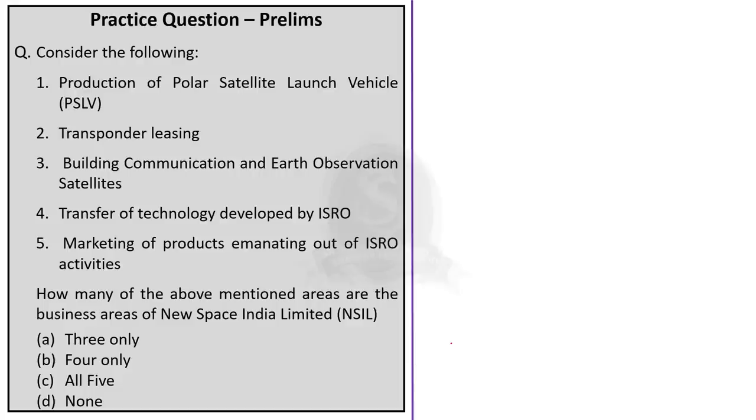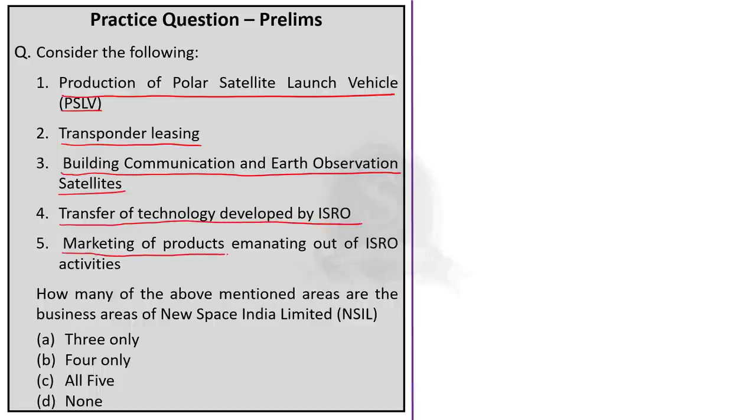Question number one. Consider the following. 1. Production of polar satellite launch vehicle. 2. Transponder leasing. 3. Building communication and earth observation satellites. 4. Transfer of technology developed by ISRO. 5. Marketing of products emanating out of ISRO activities. How many of the above-mentioned areas are the business areas of New Space India Limited? The correct answer is option C, all five. New Space India Limited is a wholly owned Government of India company under the administrative control of the Department of Space. NSIL is the commercial arm of ISRO. Its prime responsibility is to enable Indian industries to take up high-technology space-related activities. It is also responsible for promoting and commercializing the products and services emanating from the Indian space program. So, all these areas mentioned here are the business areas of NSIL.